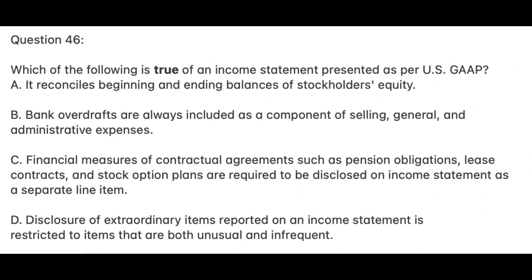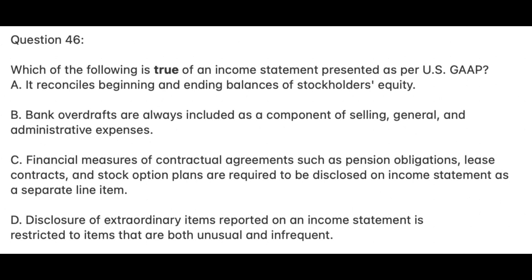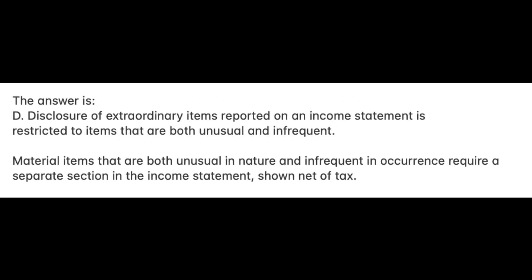Question 46. Which of the following is true of an income statement presented as per U.S. GAAP? A. It reconciles beginning and ending balances of stockholders' equity. B. Bank overdrafts are always included as a component of selling, general, and administrative expenses. C. Financial measures of contractual agreements such as pension obligations, lease contracts, and stock option plans are required to be disclosed on the income statement as a separate line item. D. Disclosure of extraordinary items reported on an income statement is restricted to items that are both unusual and infrequent. The answer is D. Material items that are both unusual in nature and infrequent in occurrence require a separate section in the income statement, shown net of tax.